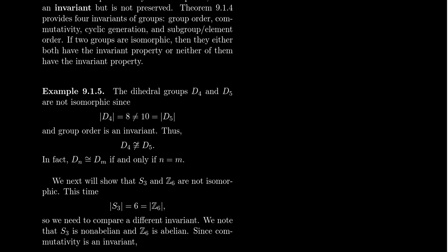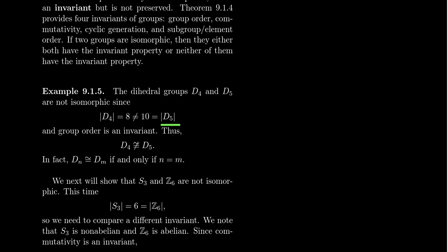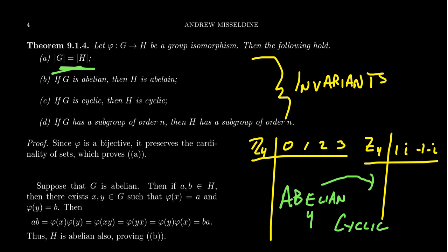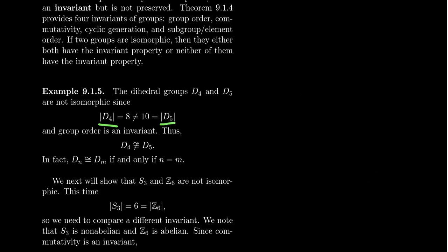Let's look at the dihedral group D4 versus D5. D4 is the symmetry group of the regular square, and D5 is the symmetry group of the regular pentagon. These two groups are non-isomorphic. How do I know? Look at their orders: D4 has order 8 (two times four), and D5 has order 10 (two times five). Since the order of a group is an invariant, and D4 and D5 don't have the same order, there cannot be an isomorphism between them — that would prove 8 equals 10, which is a contradiction. Therefore, D4 is not isomorphic to D5.